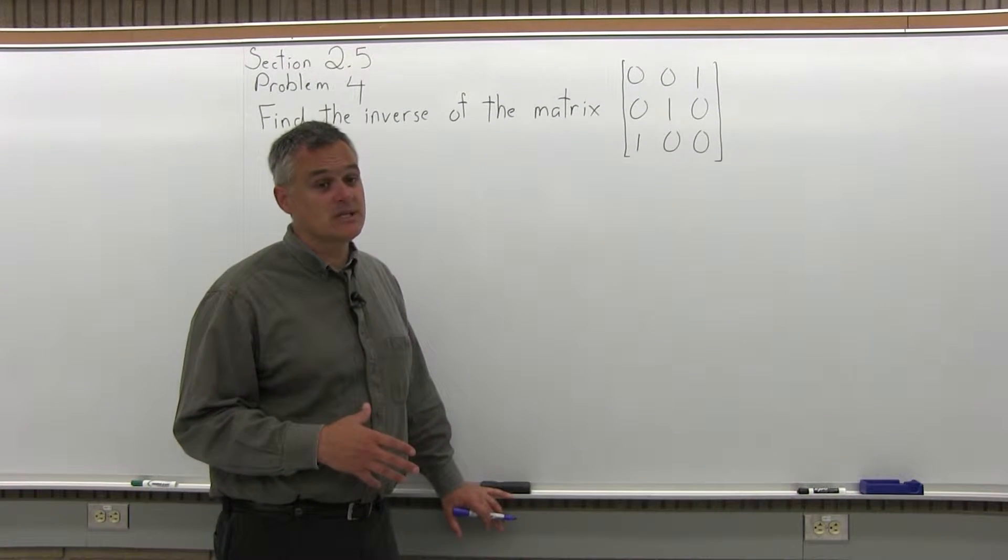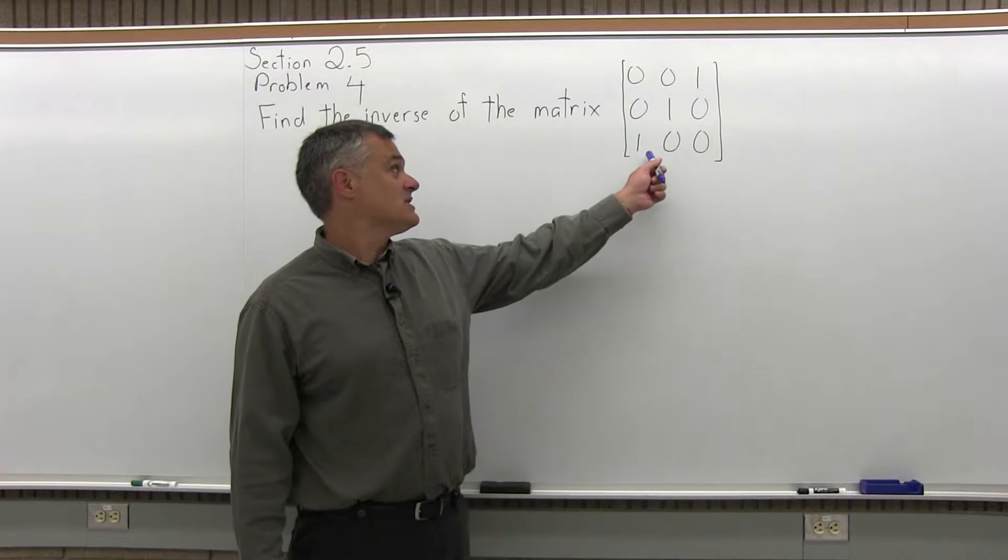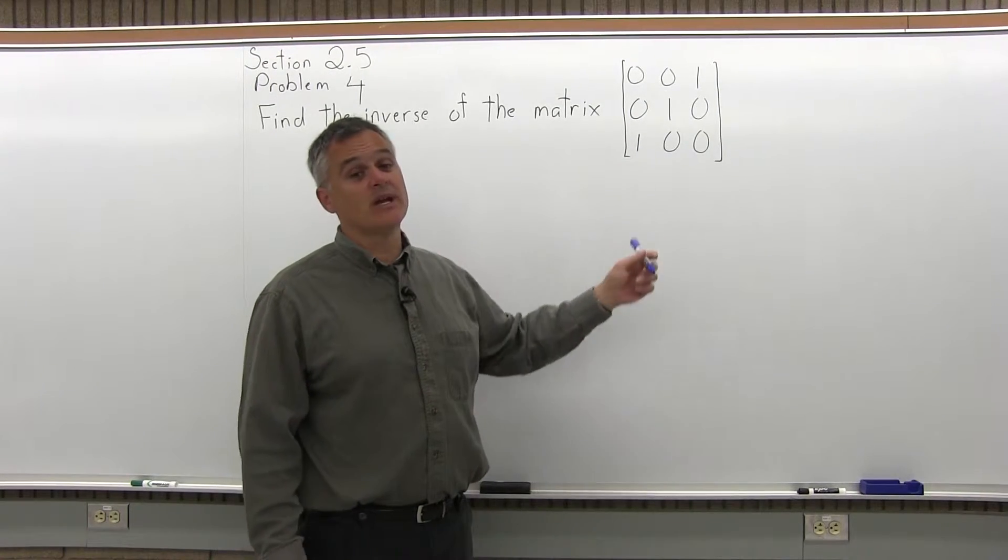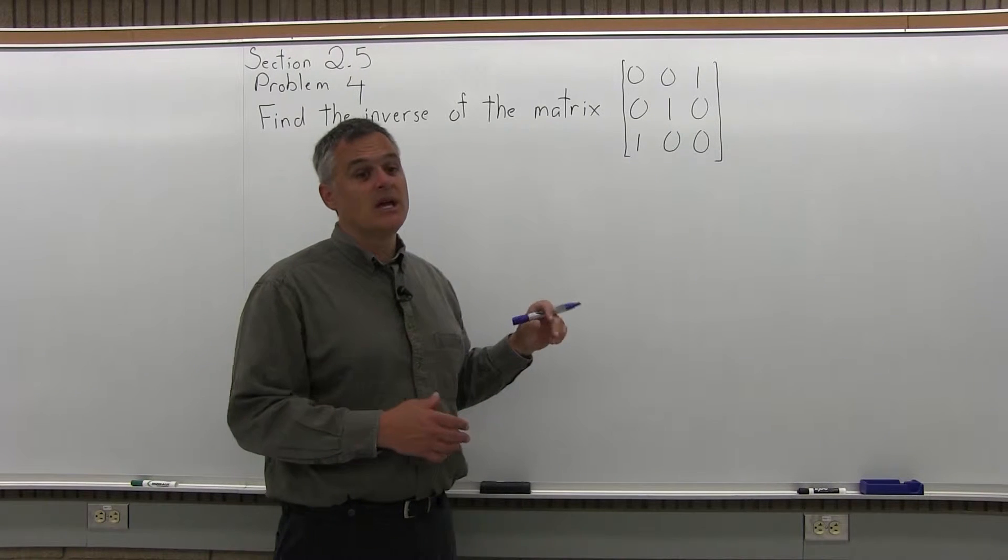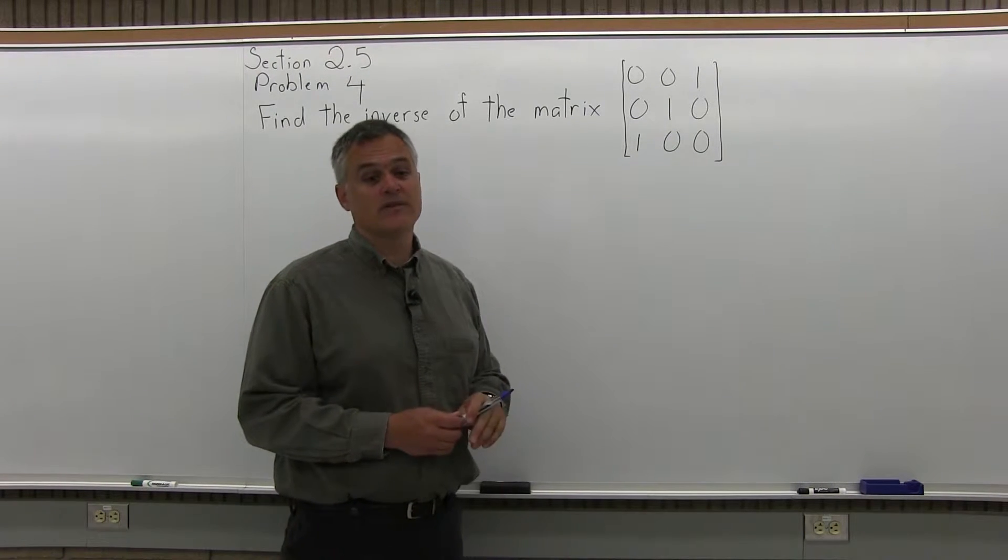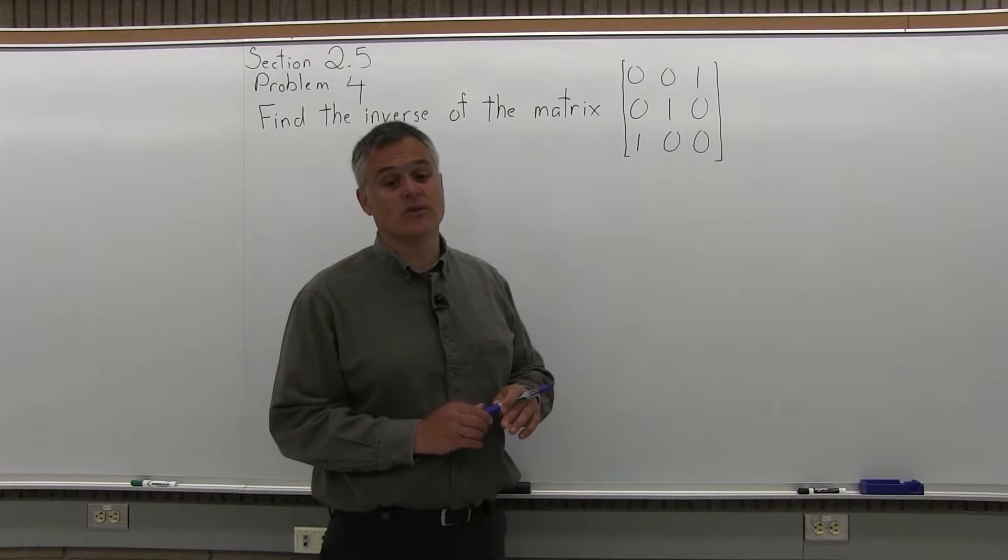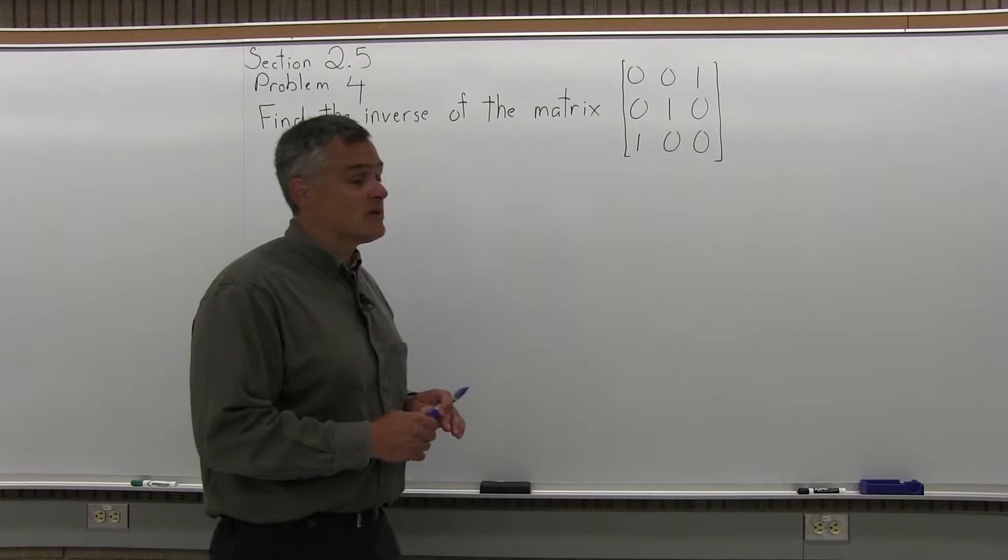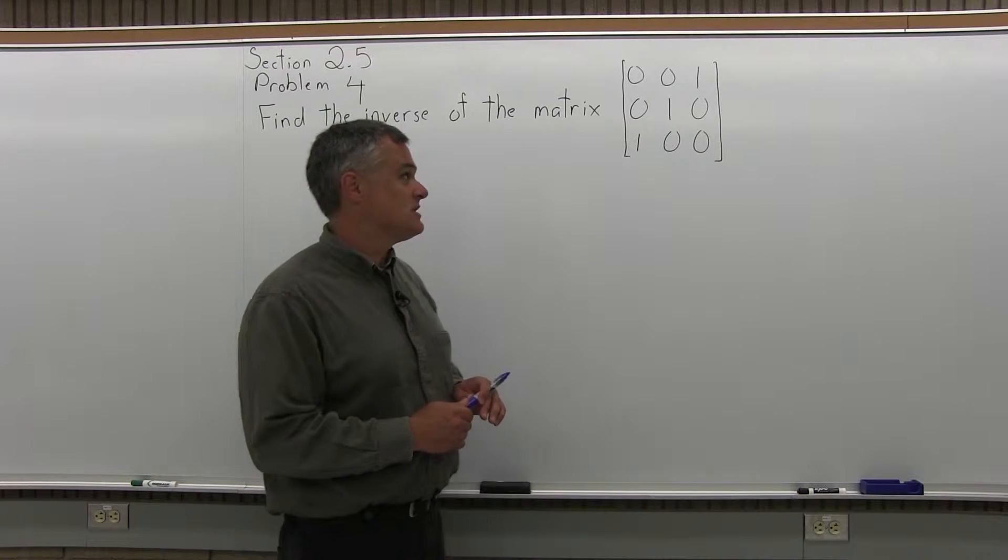We're going to make a double matrix with the matrix they gave us as the left half of the double matrix. We're going to write an identity matrix as the right half of the double matrix. And we're just going to solve the one on the left. The one on the right will turn into the inverse. And this one, even though it's bigger, this is going to be a fairly easy one, as you'll see when we solve it.